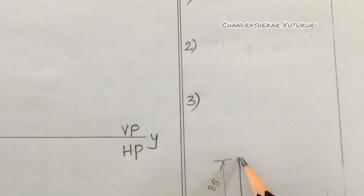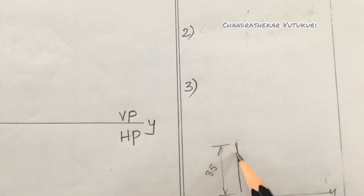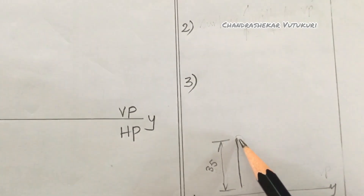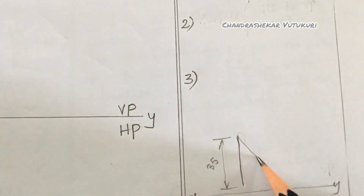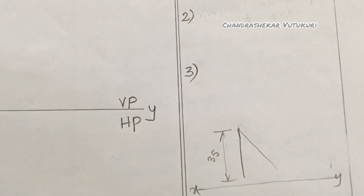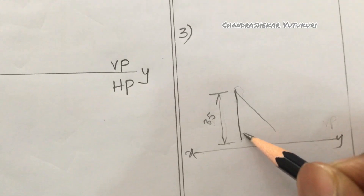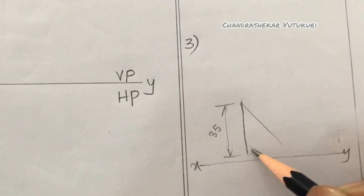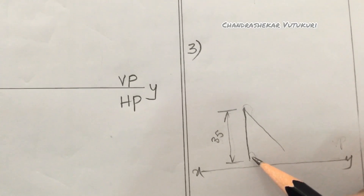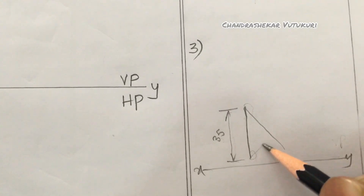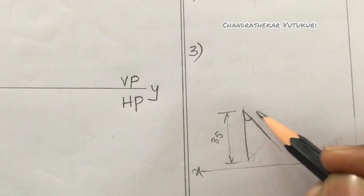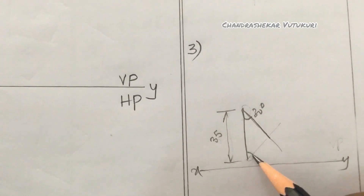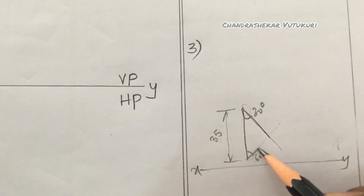We are supposed to mark this set square with respect to this longest edge. Since it is a 30-60 combination, place your protractor here and draw a line making an angle of 30 degrees and extend it. Then place the protractor again and make an angle of 60 degrees and join to mark the set square making angles of 30 and 60 degrees.